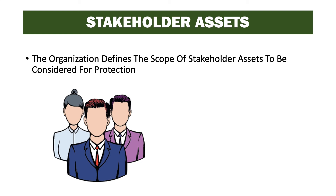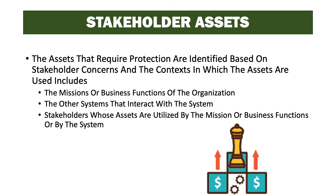The organization defines the scope of stakeholder assets to be considered for protection. Earlier we identified stakeholders, and now we think about those stakeholders' assets that will be protected by the controls we put in place for this information system. The assets that require protection are identified based on stakeholder concerns and the context in which the assets are used, including the missions or business functions of the organization, other systems that interact with the system, and stakeholders whose assets are utilized by the mission, business functions, or the system.